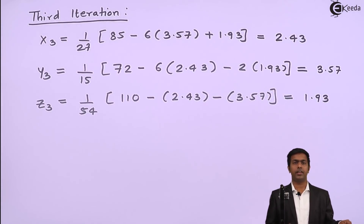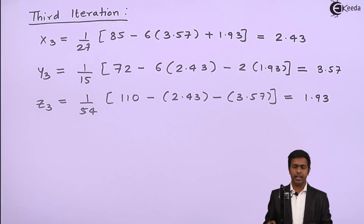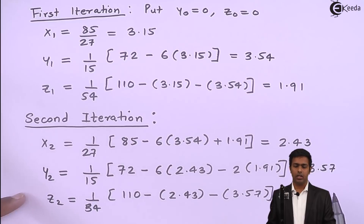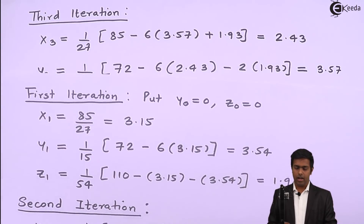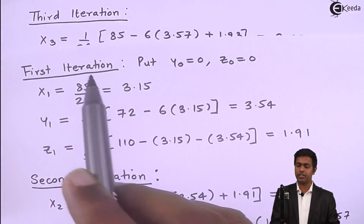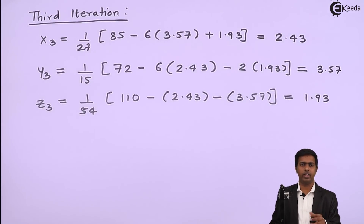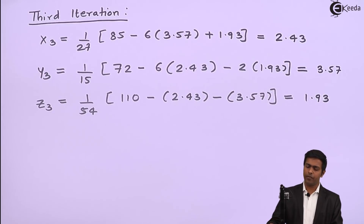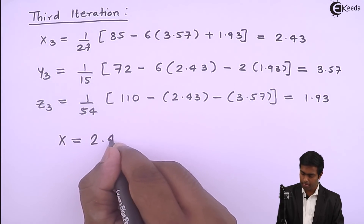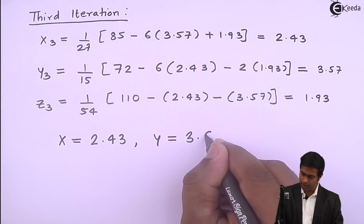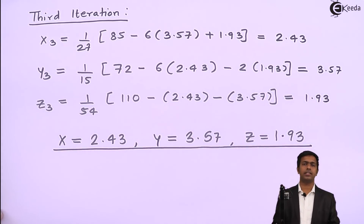Comparing the third iteration with the second iteration: z₃ = 1.93 equals z₂ = 1.93; y₃ = 3.57 equals y₂ = 3.57; and x₃ = 2.43 equals x₂ = 2.43. We are getting the same values in consecutive iterations, so we have reached the desired accuracy. Therefore, the roots of the given simultaneous equations are x = 2.43, y = 3.57, and z = 1.93.